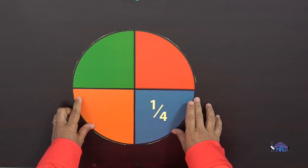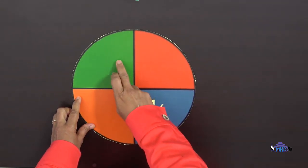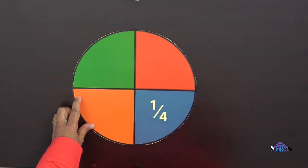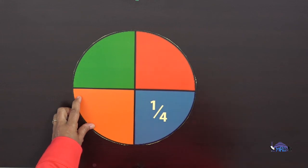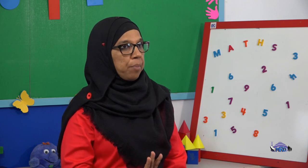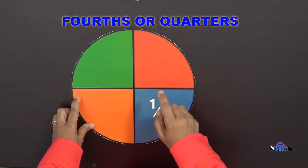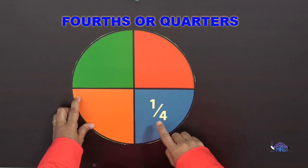Let's look at another example of fourths and quarters. This is a circle. If you look at our circle, you will see that it is separated into four parts. For it to be fourths or quarters, it must be separated into four equal parts. You will see that each of our colored parts is equal — each piece is called a fourth or a quarter. This shape is separated into four equal parts, and each part is called a fourth or a quarter.